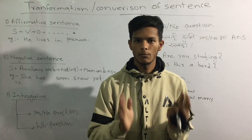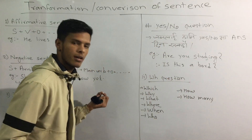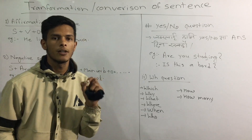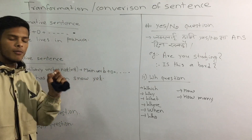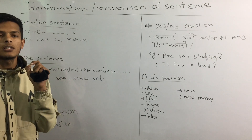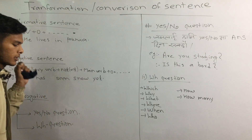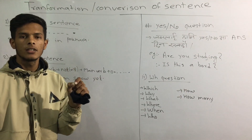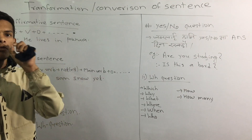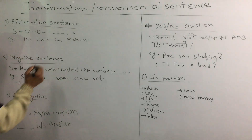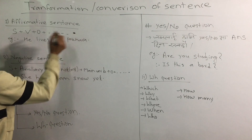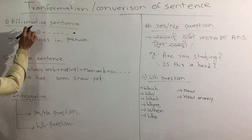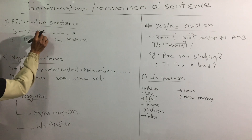Let us do an example. Now we will find out about sentences and know what makes affirmative sentences. What is the sentence structure of the affirmative? Subject plus auxiliary verb plus object, full stop. Subject plus verb, subject plus verb plus object.